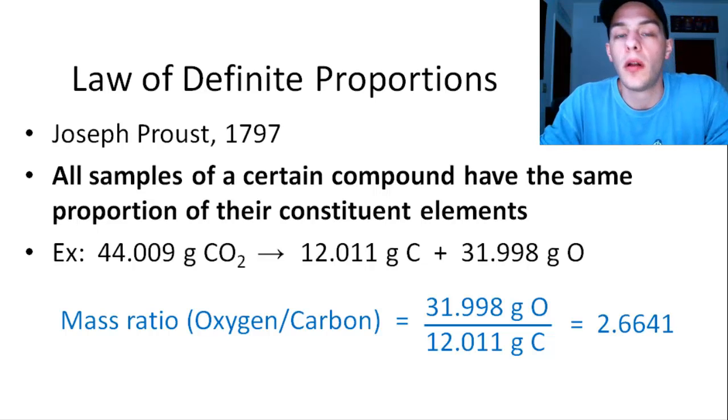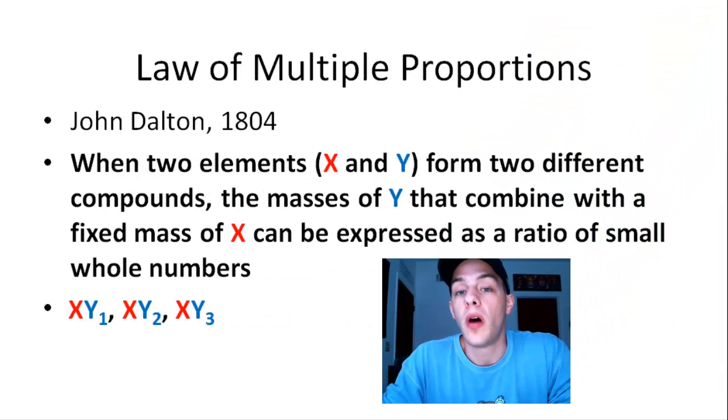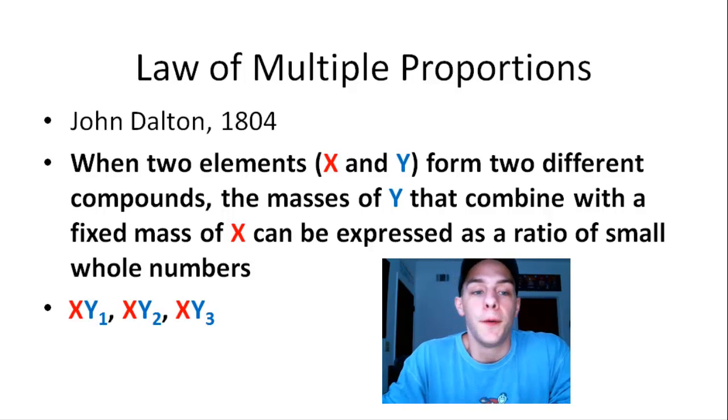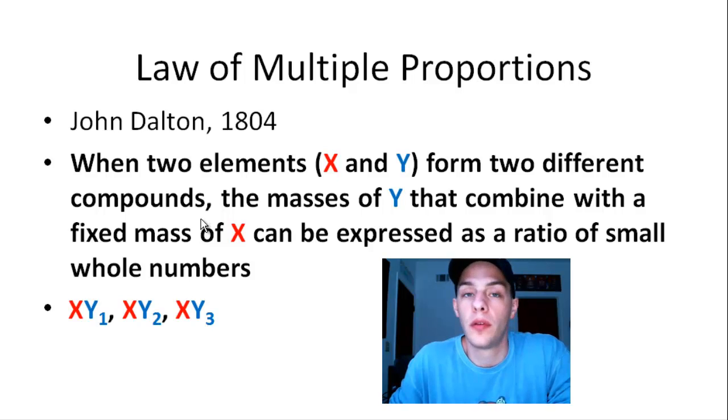So that's what the Law of Definite Proportions says. Now let's move into the Law of Multiple Proportions. And this was proposed by John Dalton a little later. And it says that when two elements, so let's call them X and Y, when two elements form two different compounds, the masses of element Y that combine with a fixed mass of element X can be expressed as a ratio of small whole numbers.